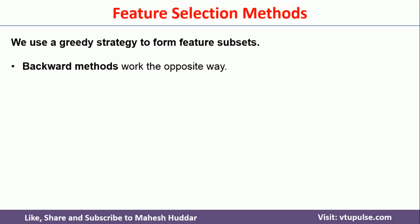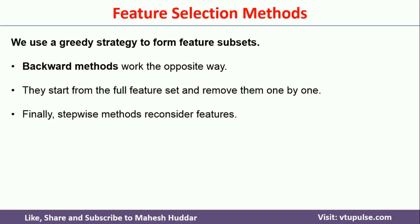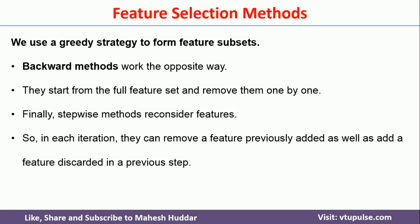In the backward wrapper method, it is opposite to the forward approach — we start with all features. Then we go on removing one feature at a time and monitor the performance of the supervised machine learning model. The configuration that gives the maximum performance is considered the final feature set. These are the two methods used to generate subsets of features.